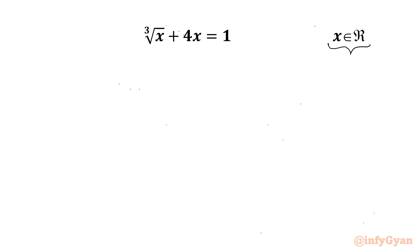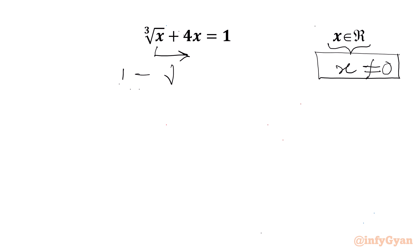Let's get started by writing x cannot be equal to 0, as it is not satisfying our equation. LHS will give us 0 and RHS is 1. Now I will take this cube root x to the RHS, so I can write 1 minus cube root x equal to 4x.